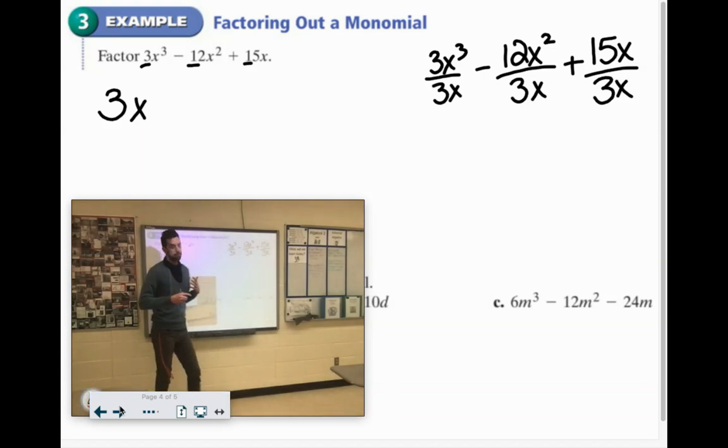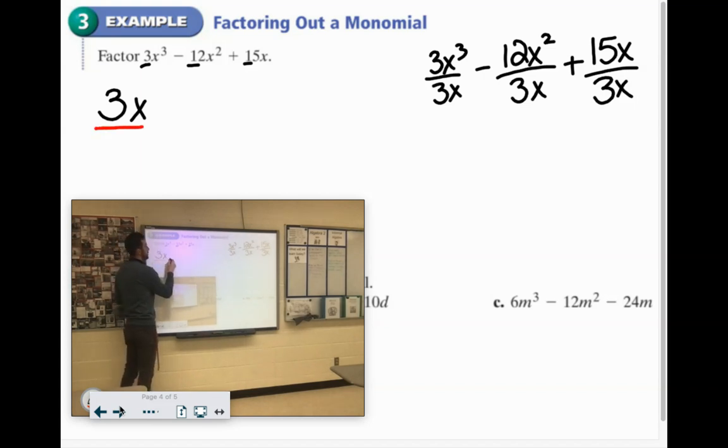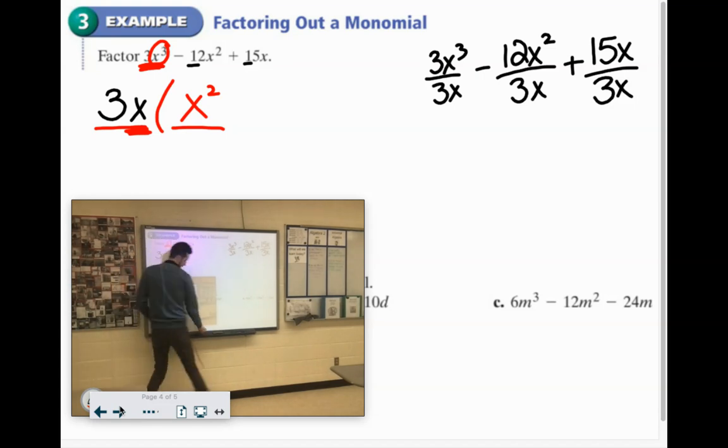I like to think of it like this, kind of like a fill-in-the-blank problem. 3x times what would give me 3x to the third? So I know 3 times 1 would give me 3, but I don't need to write the 1. Because x times x squared would give me x to the third. So I'm like, oh, well, I have 1x. I need 3x's, right, x to the third. So I'm missing 2 more there. That's how I like to think of it.